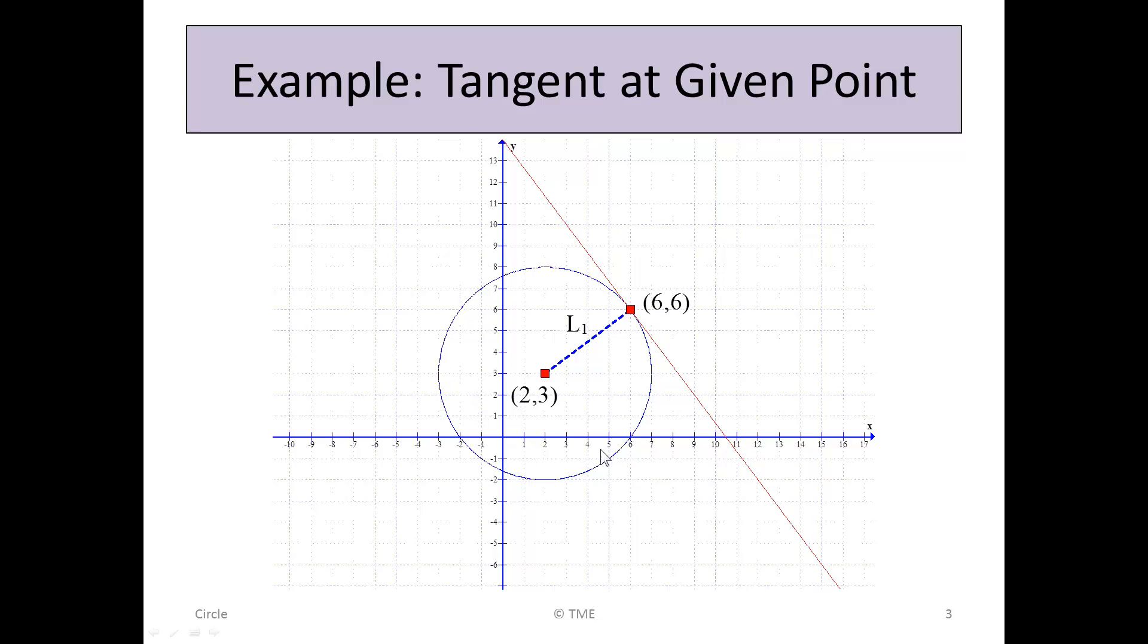Visually, what's happening here is we have a circle centered at (2, 3) with a point on the circle of (6, 6), and we're interested in this line here. It's called a tangent. It's at 90 degrees to this line here, and we want the equation of that tangent.